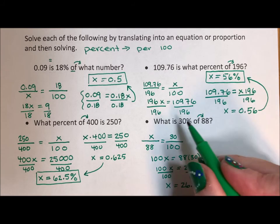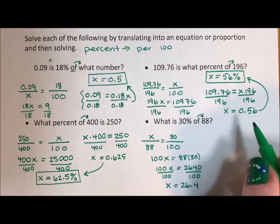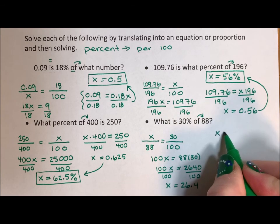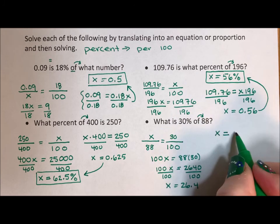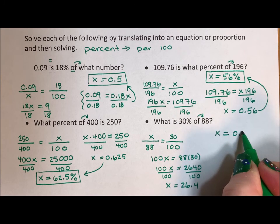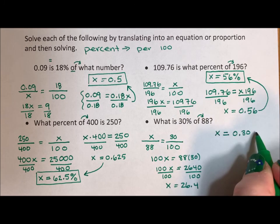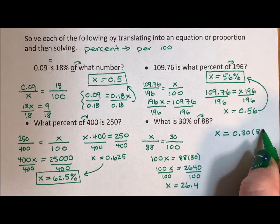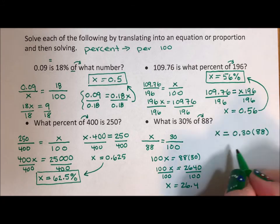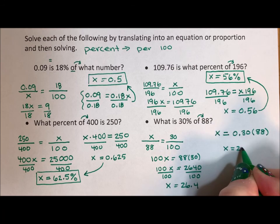If we translate this into a sentence, what is 30%, that's 0.3 or 0.30, of is multiplication, 88. Well, 0.3 times 88 is 26.4.